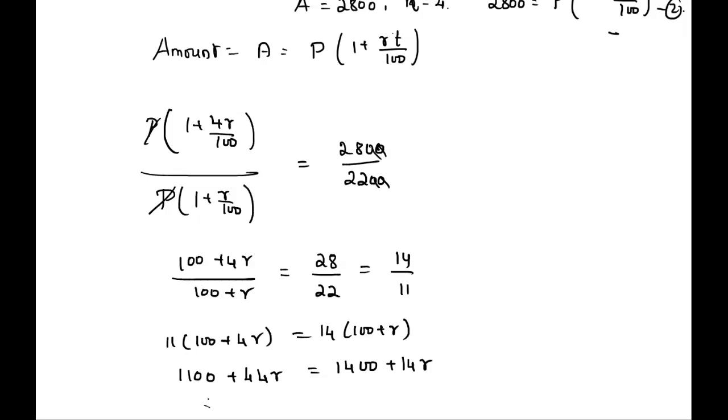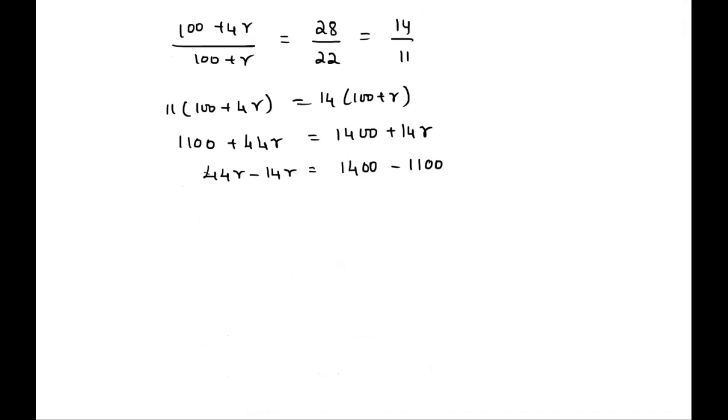We can rewrite this as 44R minus 14R equals 1400 minus 1100, which implies 30R equals 300. Hence R equals 300 divided by 30, which is equal to 10. The rate of interest is 10 percent.